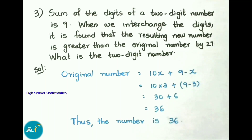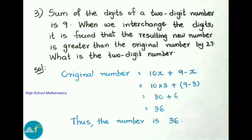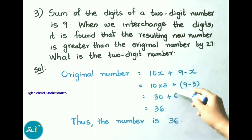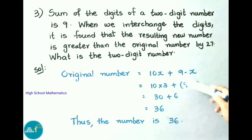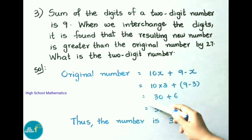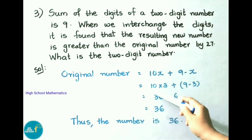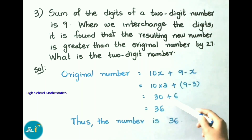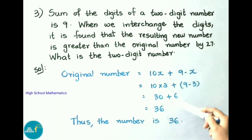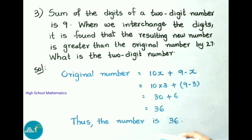Now let us find the original two-digit number: 10x + (9 − x) = 10(3) + (9 − 3) = 30 + 6 = 36. Therefore, the original two-digit number is 36.